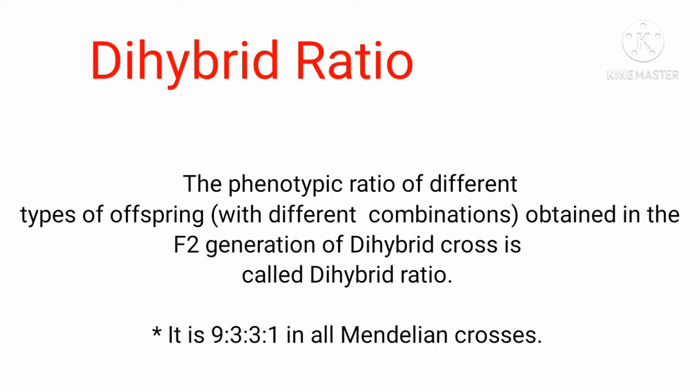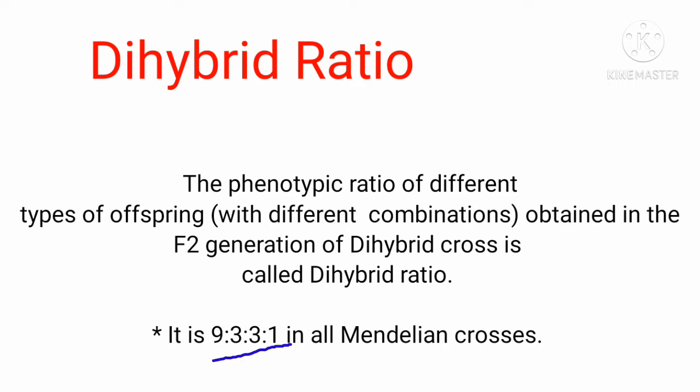The phenotypic ratio of different types of offspring obtained in the F2 generation of a dihybrid cross is called the dihybrid ratio. The ratio is 9:3:3:1 in Mendelian crosses, based on observable characters — plants with yellow round, yellow wrinkle, green round, and green wrinkle seeds. This phenotypic ratio in dihybrid cross is fixed: all Mendelian dihybrid crosses give the ratio 9:3:3:1.